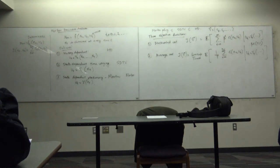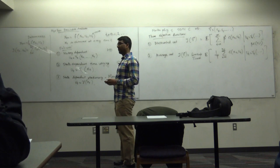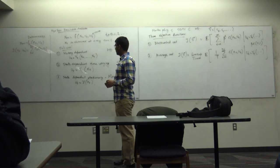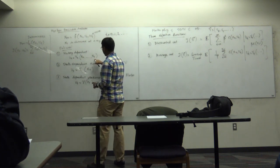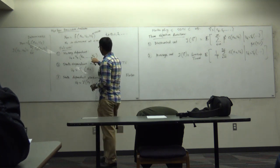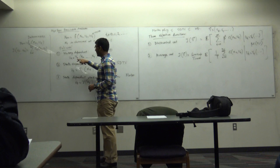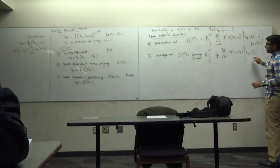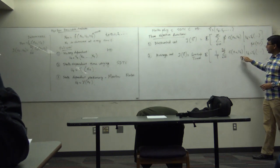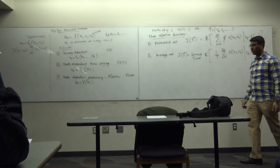Regarding policies for these infinite-horizon criteria: you could have a Markov policy where gamma is the same at every time step. Including past controls u_0, u_1, ... in your policy doesn't add generality, because each u_t is already a function of the states, so you can just suppress that dependence and express everything as a function of x_0 through x_t.